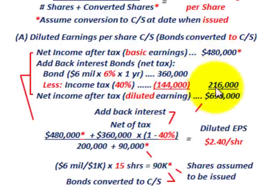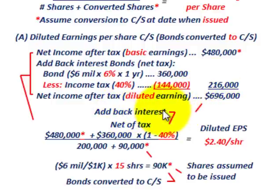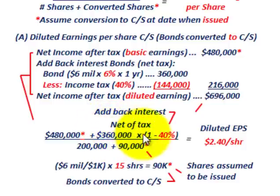For diluted earnings, we add that interest expense back to basic earnings of $480,000, giving us net income for diluted EPS of $696,000. The formula shortcut: take bond interest of $360,000 times (1 minus the tax rate), so $360,000 × 60% = $216,000. Adding $480,000 plus $216,000 gives us $696,000 for the diluted EPS numerator.